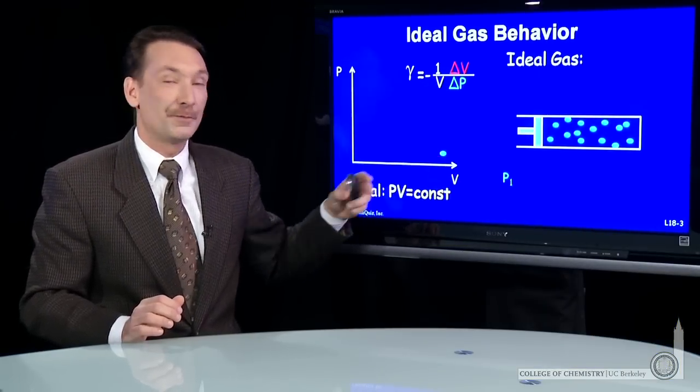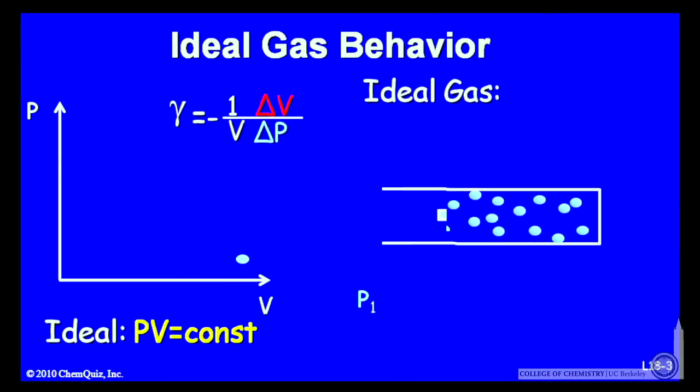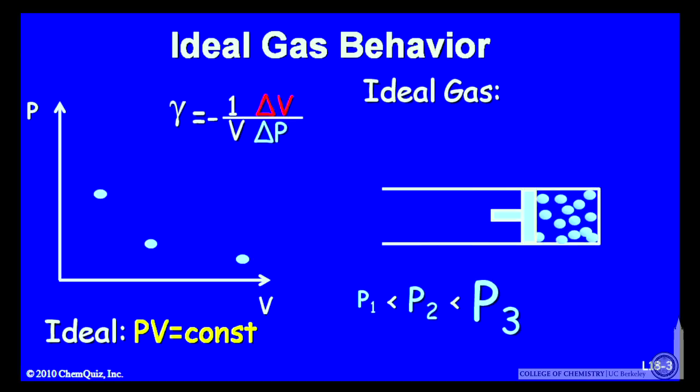I'll start here at a certain pressure and a certain volume. And as I decrease the volume, the pressure will increase by the ideal gas law. As I continue to decrease the volume, the pressure will continue to increase.